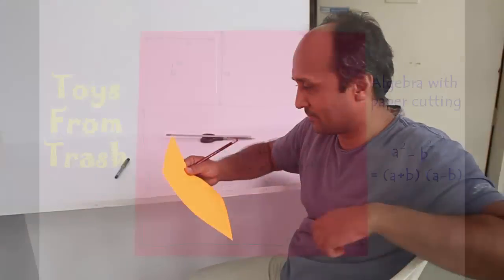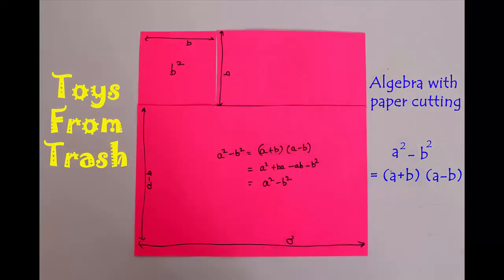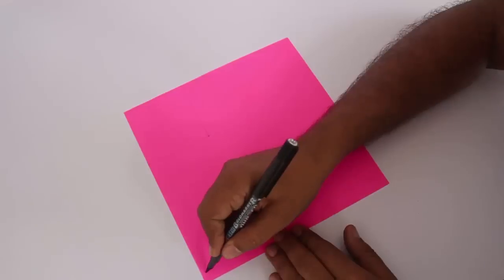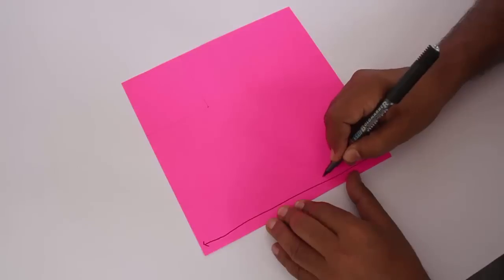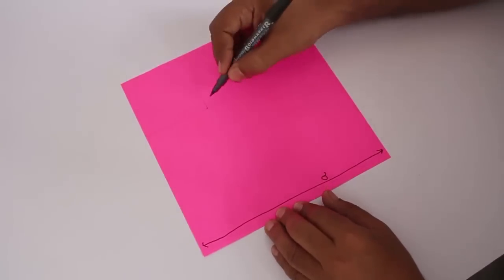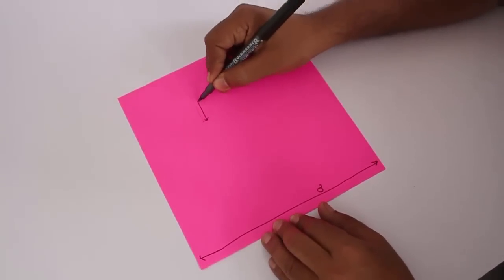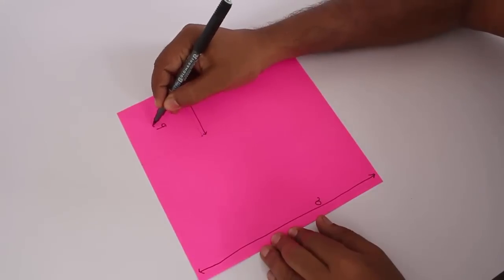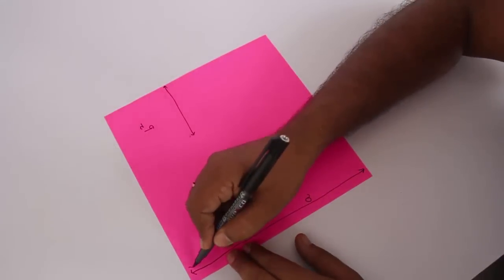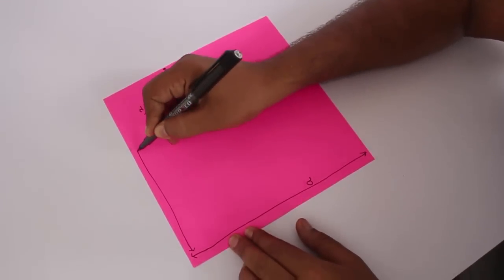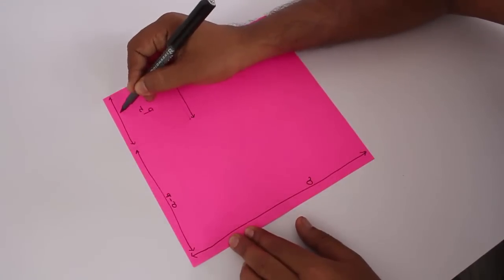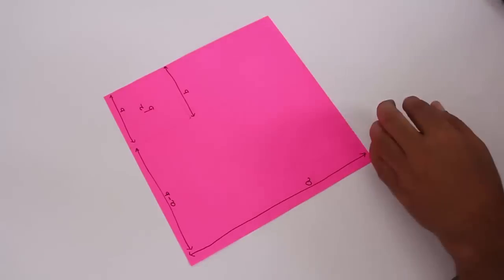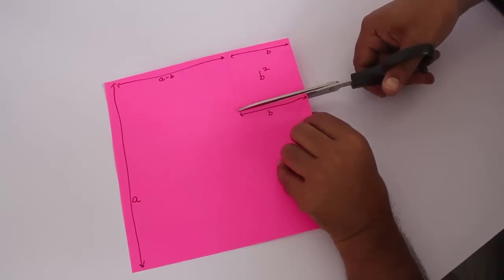Let's go do it. This is a square of side a, and its area is a squared. This is another square inside with side b, and its area is b squared. This side will be a minus b, because this side is b.